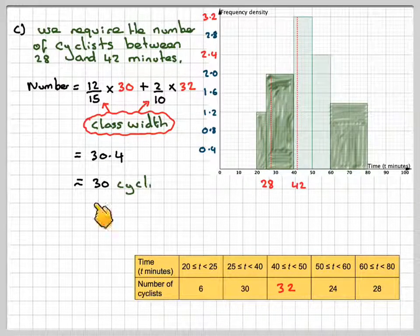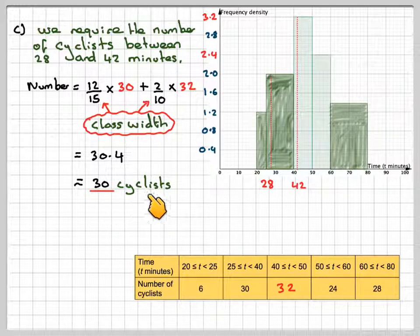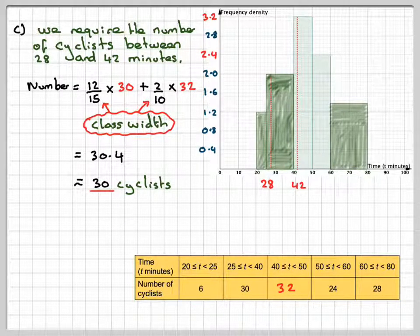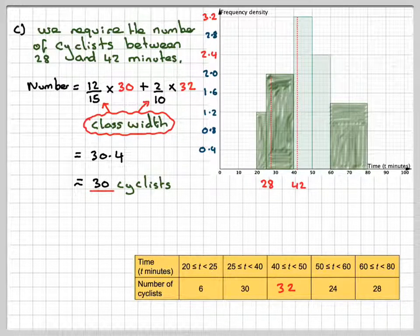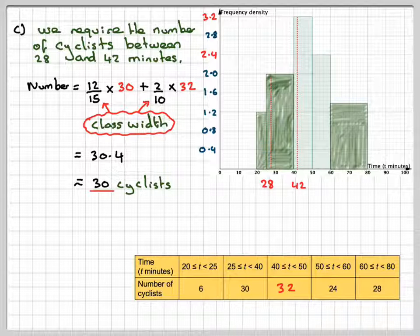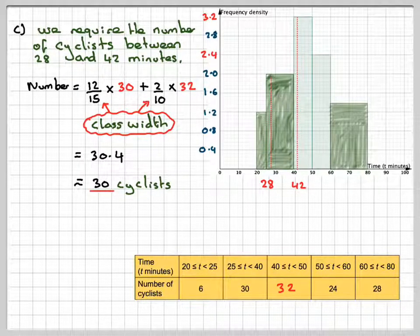So it's going to be approximately equal to 30 cyclists. This has been a video to show you how to find the vertical scale of a histogram and then use the histogram, then complete the histogram using the table, and then also use the histogram to get some information from it. I hope you've understood and thank you very much for watching.